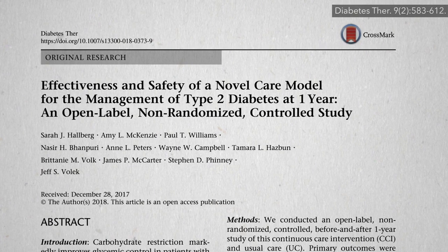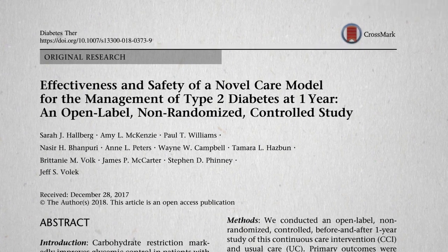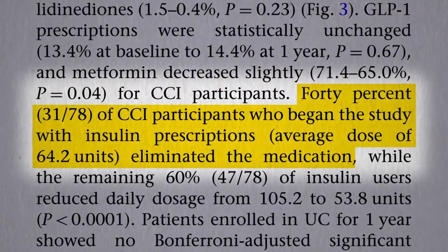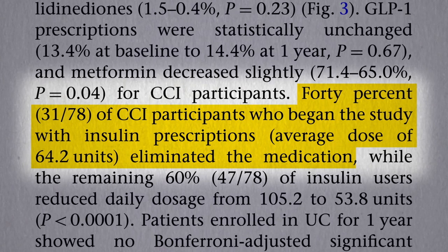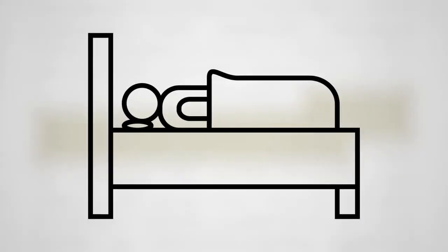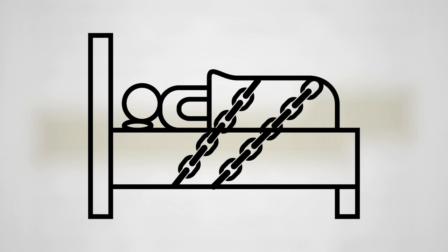The reason keto proponents claim they can quote-unquote reverse diabetes is that they can successfully wean type 2 diabetics off their insulin. But that's like faith-healing someone out of the need for a wheelchair by making them lie in bed the rest of their lives. No need for a wheelchair if you never move. Their carbohydrate intolerance isn't gone. Their diabetes isn't gone. It could be as bad or even worse.